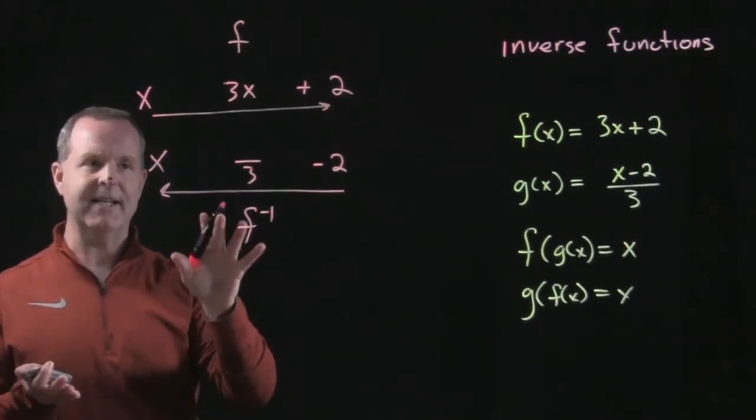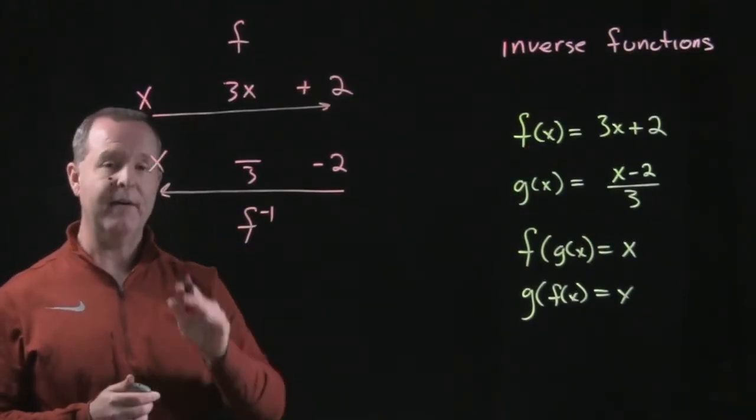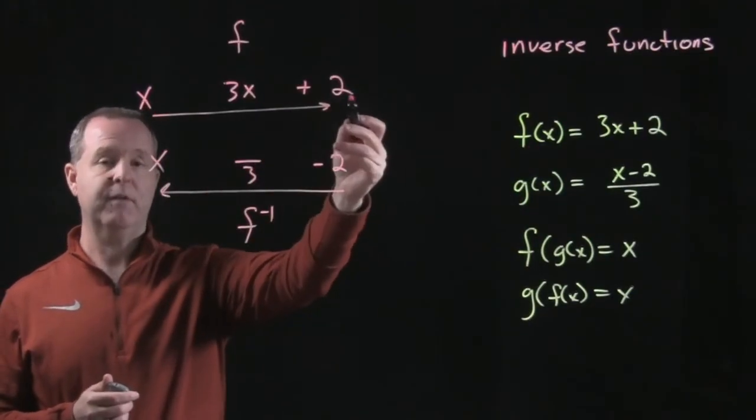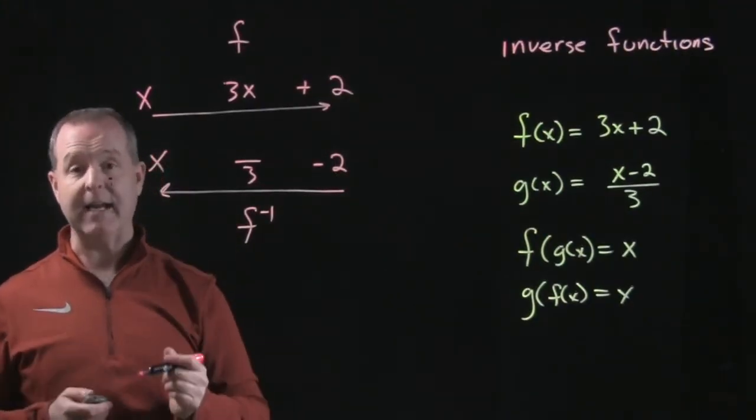So I hope you can kind of get a sense and see that's what's happening to those values that we have as we're flushing them through the first function, then undoing them as we run through the second function.